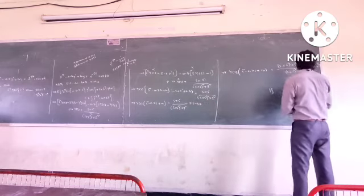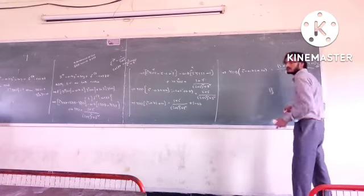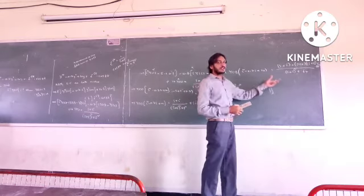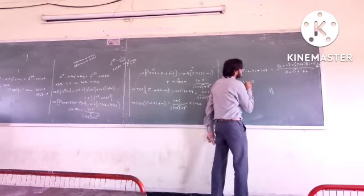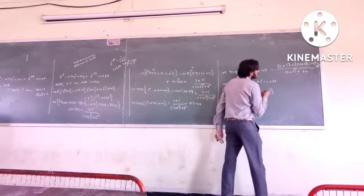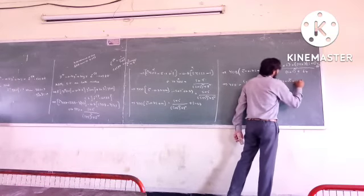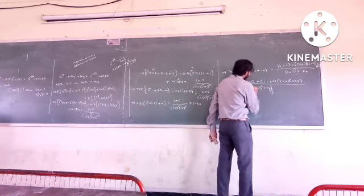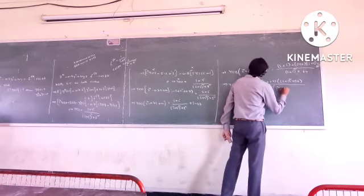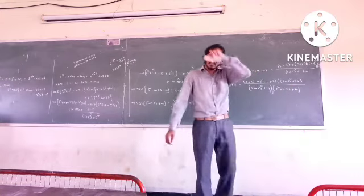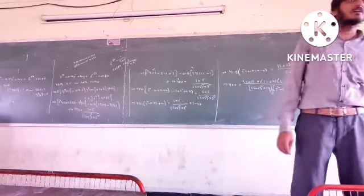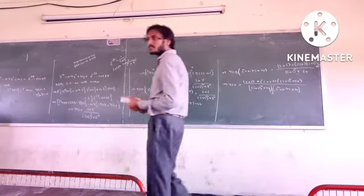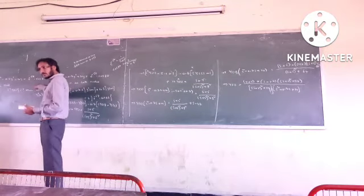So Y(s) equals [s + 5 plus (s minus 1.7) into ((s+5)² + 64)] divided by [(s+5)² + 64] into [s² minus 0.7s + 10]. This is the final expression for Y(s), considering the initial conditions and the u-v rule.